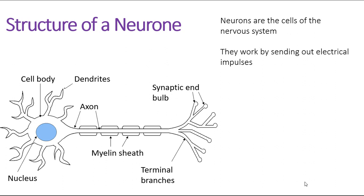All neurons, regardless of which type, will have a cell body. This is where you find things such as the nucleus and the cytoplasm, and all the different organelles of the cell. They also will have dendrites — these branch-like structures that bring the electrical impulse into the neuron. There is also an elongated stretched part which is the axon, surrounded by an insulating myelin sheath.